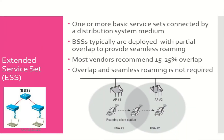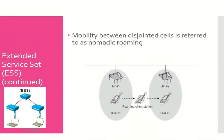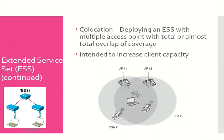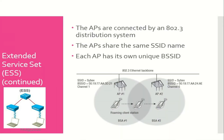Extended Service Set (ESS): one or more basic service sets connected by a distribution system medium. ESS is typically deployed with partial overlap to provide seamless roaming; most vendors recommend 15 to 25% overlap, though overlap is not required. Mobility between disjointed cells is referred to as nomadic roaming. Collocation means deploying an ESS with multiple access points with total or almost total overlap of coverage, intended to increase client capacity. The APs are connected by an 802.3 distribution system, share the same SSID name, and each AP has its own unique BSSID.